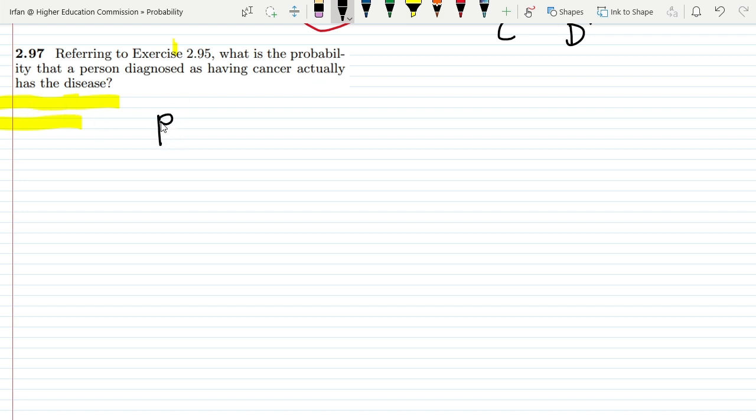What do we have to find out? We have to find out the probability of actually having a disease given that he is diagnosed positive. This is the query we have to address here.